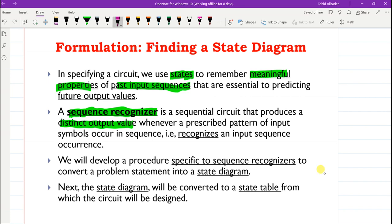It recognizes an input sequence occurrence. For example, we can have a sequence recognizer which recognizes 0-1-0-1-1-0-1-0-0-0-1. So whenever the sequence occurs as the input to the sequential circuit, its output could be set to 1, meaning that it is detected.